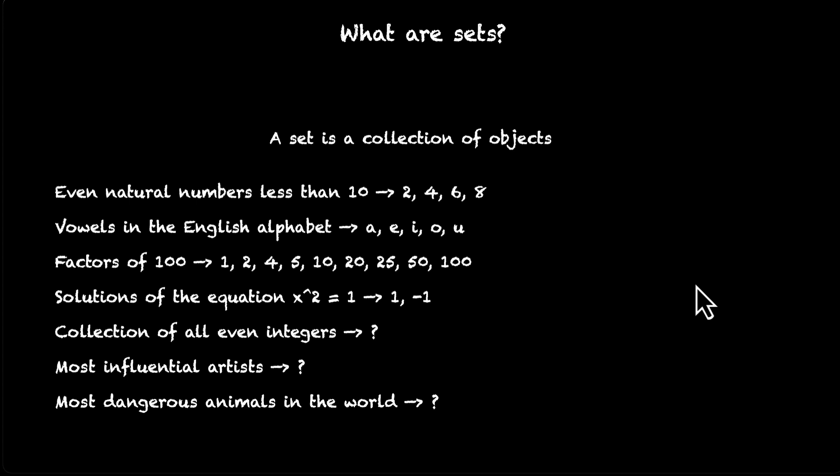The first one, even natural numbers less than 10, that's a set. The next one is a set. Factors of 100, set. Solutions of the equation, set. Collection of all even integers, that too is a set. But the next two are not sets. And I haven't been completely honest with you. I only gave you a partial definition of what a set is. Let me go back and give you the complete definition of what a set is.